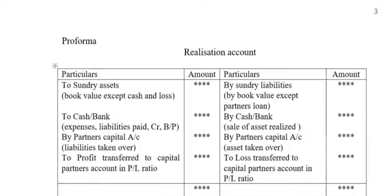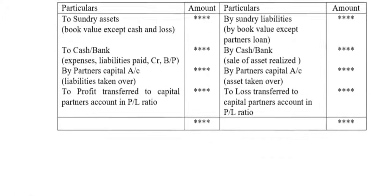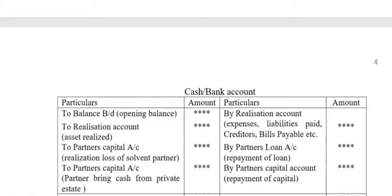Next, the Cash and Bank Account. The opening balance is taken here. Realization Account — assets realized values are transferred here. Partners' capital account — if it is a realization loss of solvent partners. On the credit side: realization account expenses paid, liabilities paid — creditors, bills payable, etc. Partners' loan account — repayment of loan. Partners' capital account — repayment of capital, or if partners have to bring cash from their private estate.